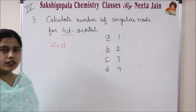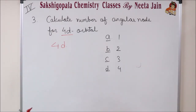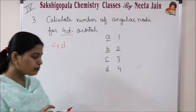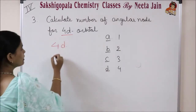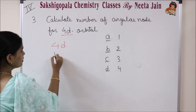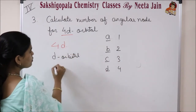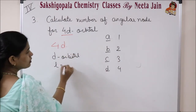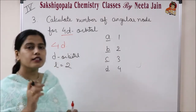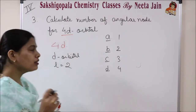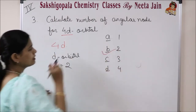Question number 3: calculate number of angular nodes for 4D orbital. For d-orbital, L equals to 2. The value of L is equal to the number of angular nodes. So the correct answer is B, that is 2.